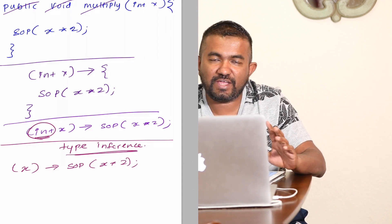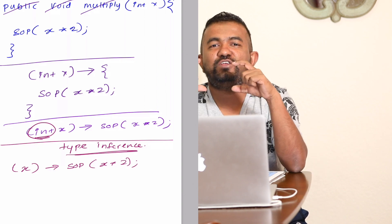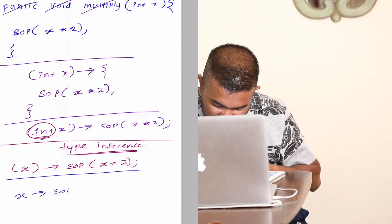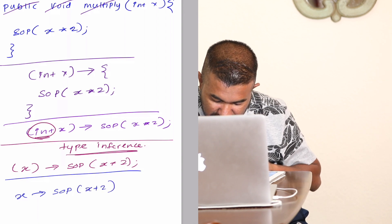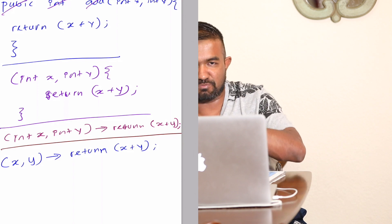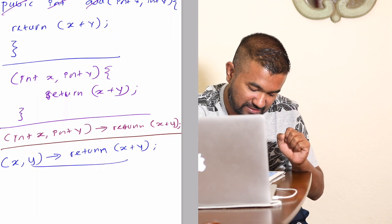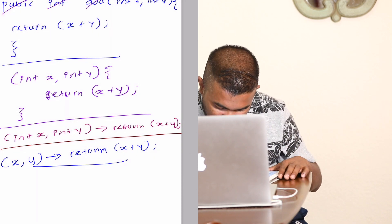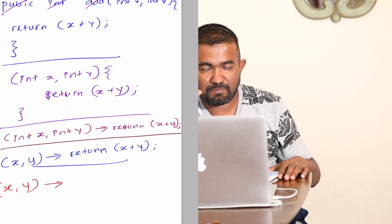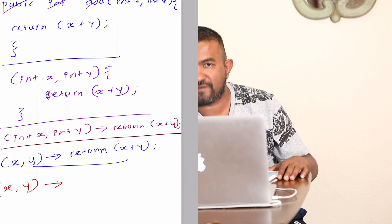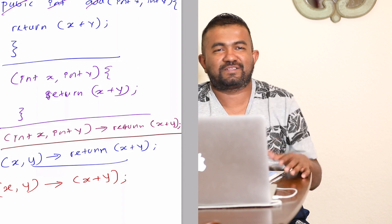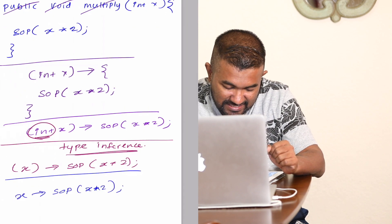Another rule: if we have only a single parameter, we don't have to use the parentheses. So it becomes: x -> System.out.println(x * 2). For the two-argument case, we can't remove the parentheses because it has two arguments. But we can simplify further — when the compiler can identify there is a return, we don't have to explicitly say return. So it becomes: (x, y) -> x + y. Even more simple!